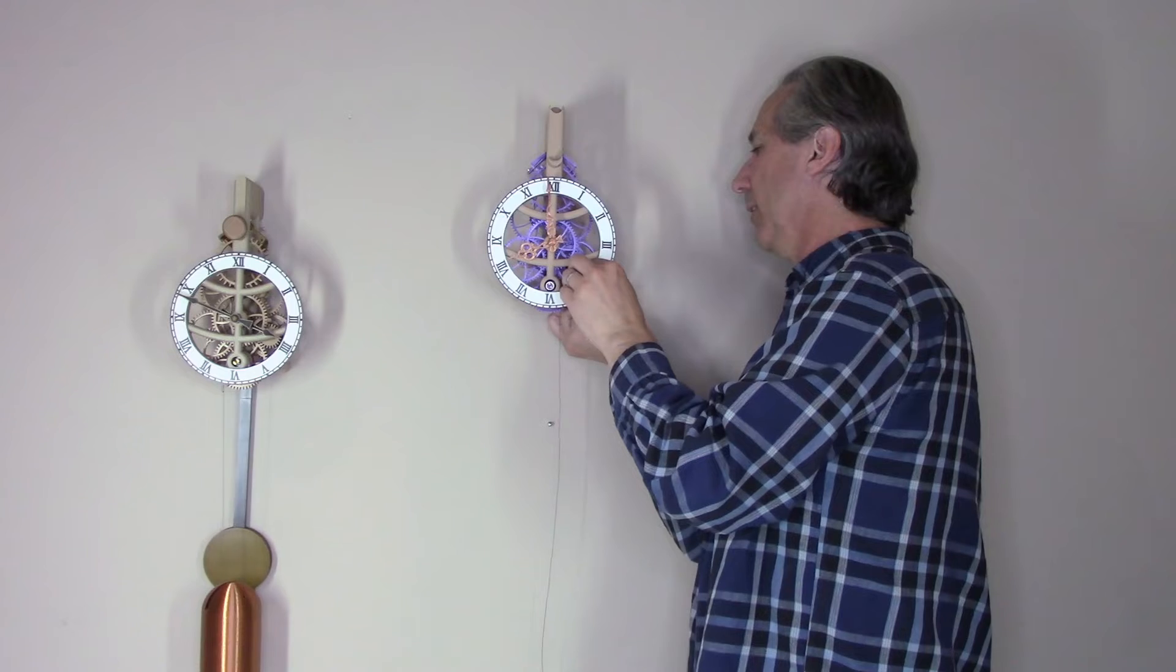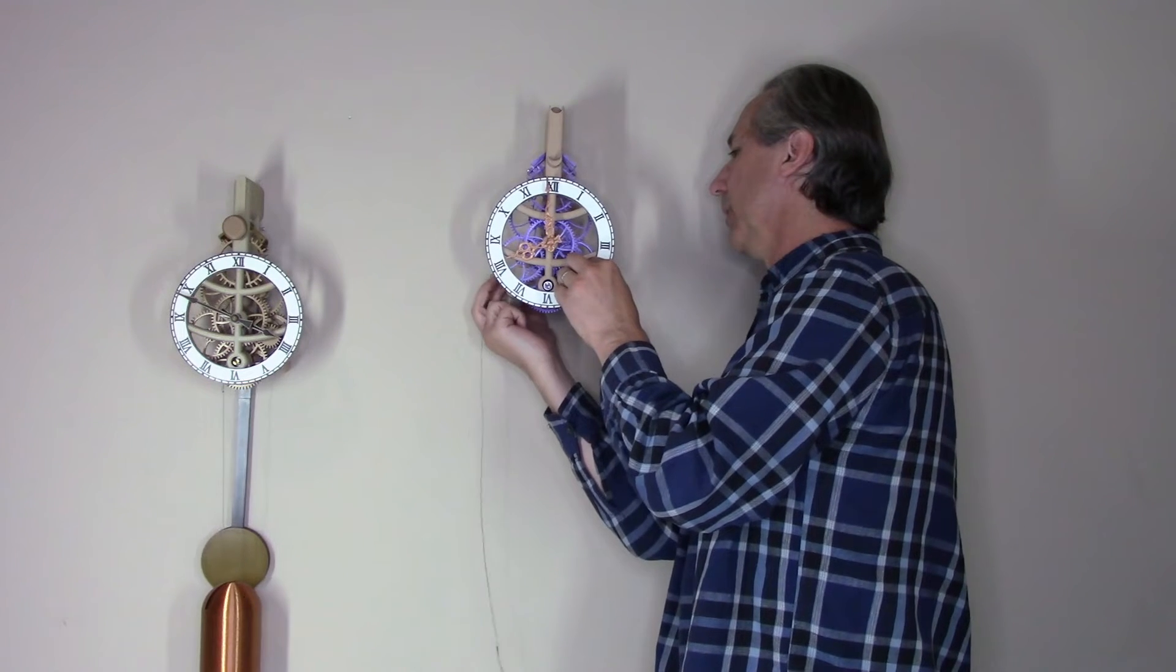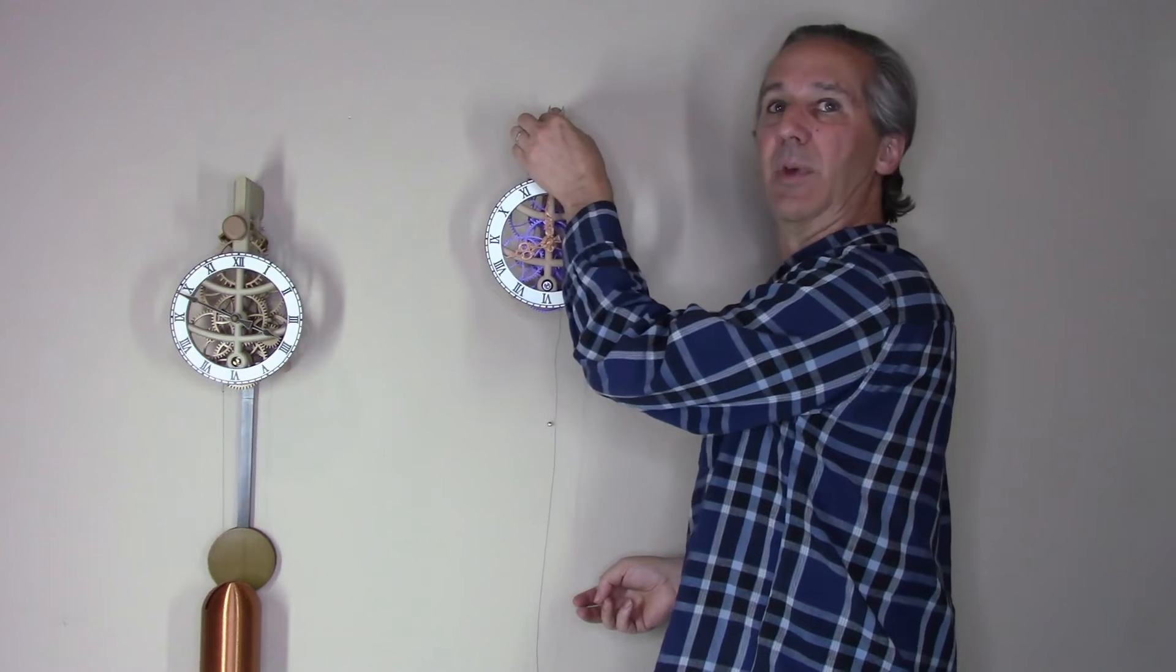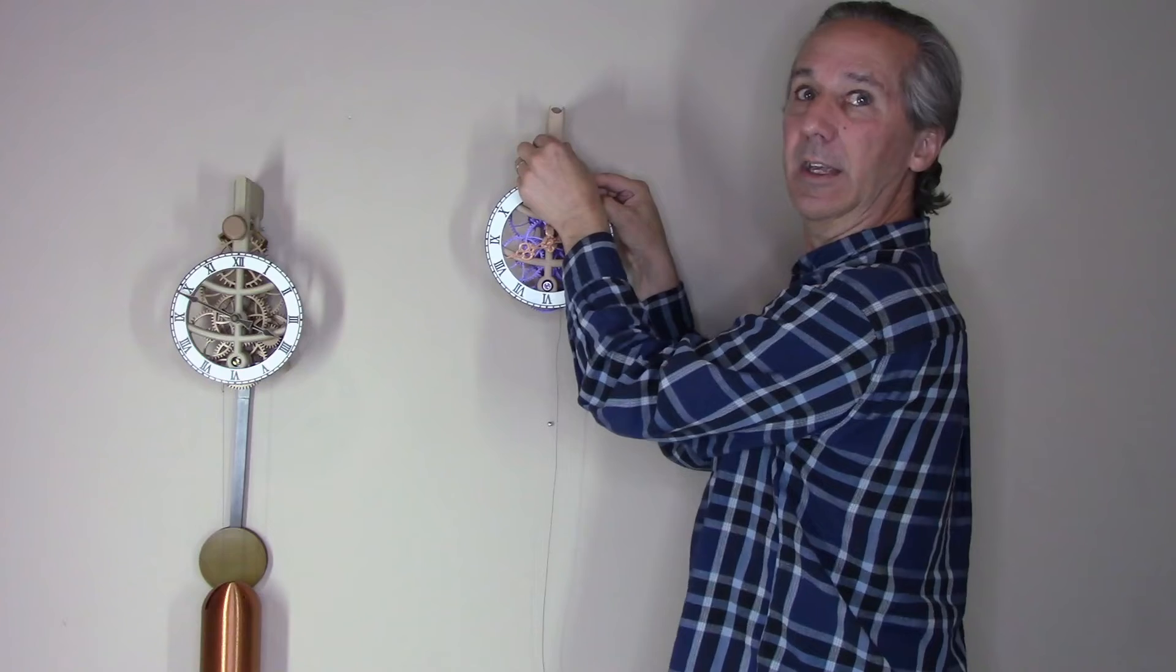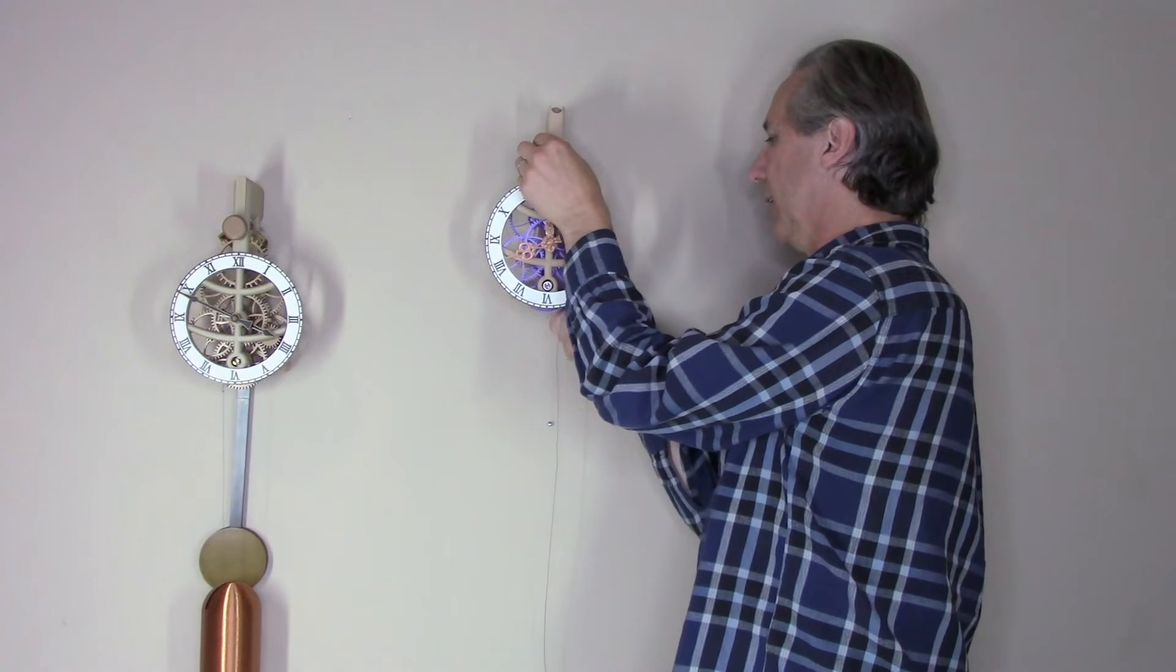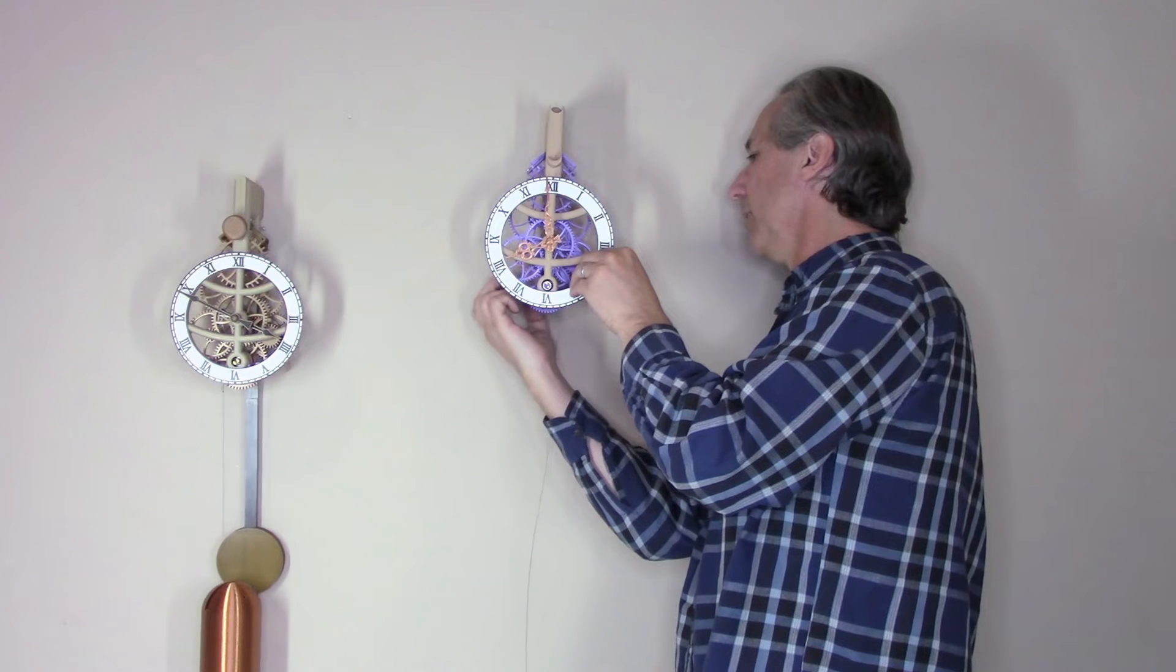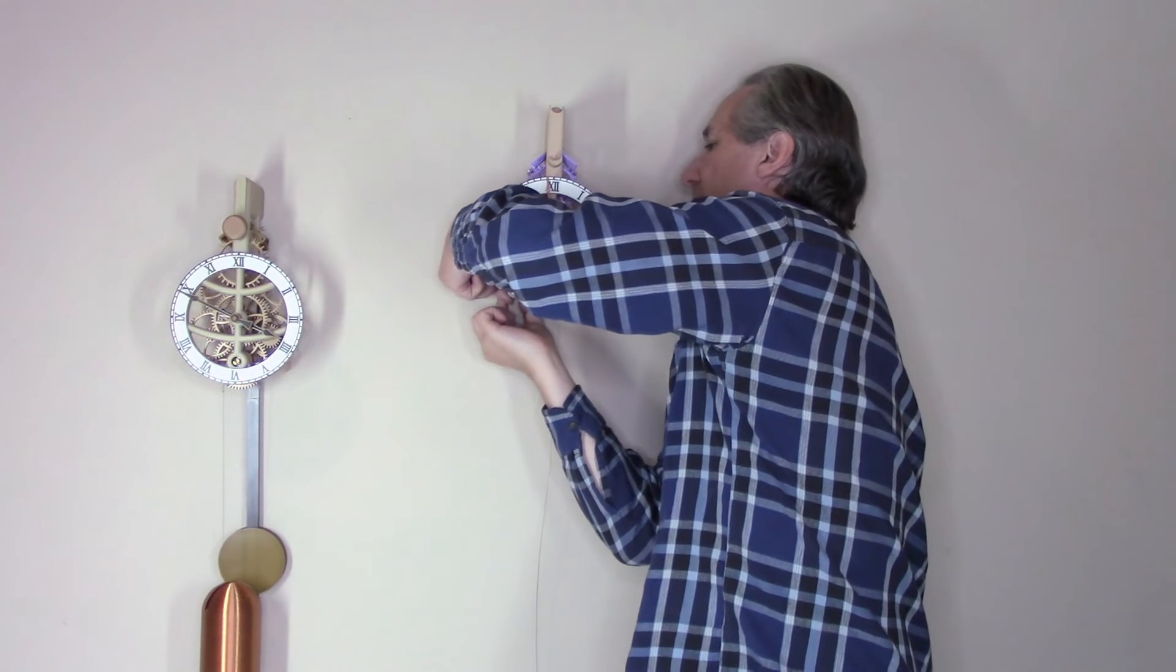Then I can loosen the caps on the lower standoffs so that they're just touching the wall. I should be able to pull down on the frame and there is no visible sag even though I'm applying several pounds of force. When that is adjusted properly, tighten the nuts against the caps and everything locks into position.